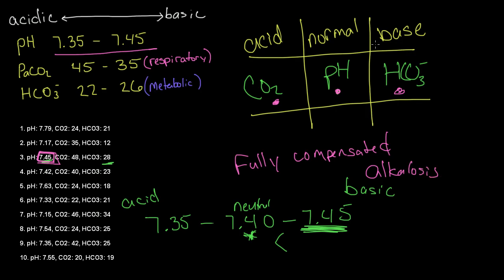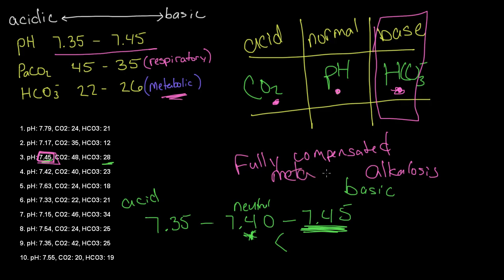Now that we know we're in alkalosis, we look in the base column — the alkalotic column — and see which parameter made it up. In this case it's our HCO3, our bicarbonate. Remember, bicarbonate is a metabolic parameter. So our final answer here is fully compensated metabolic alkalosis.